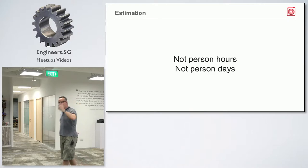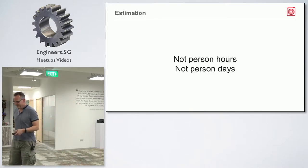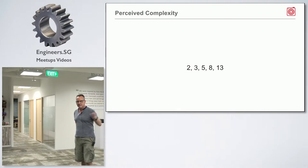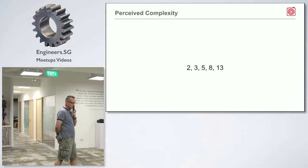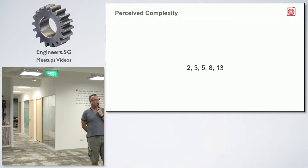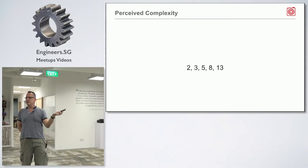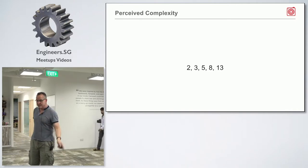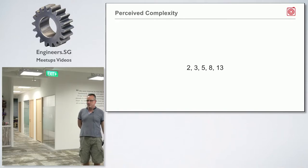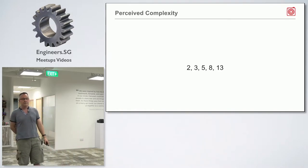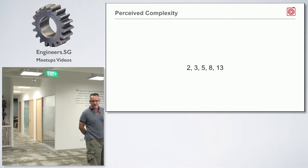Story points are about perceived complexity. Does anyone recognize this sequence? A number in the sequence is the sum of the last two numbers — it's a Fibonacci sequence. It turns out Fibonacci sequences are all over nature. A nautilus shell is a Fibonacci sequence. It ties into fractals and things like that as well.